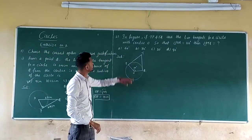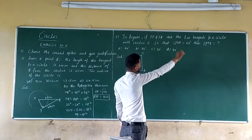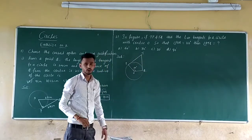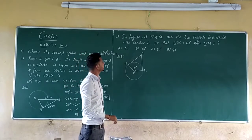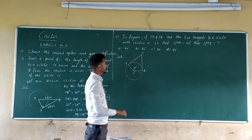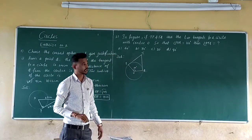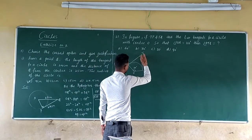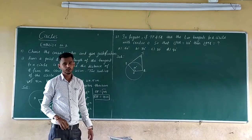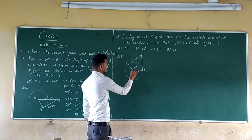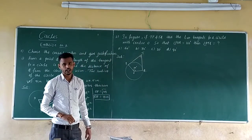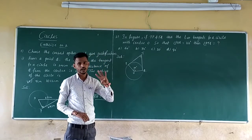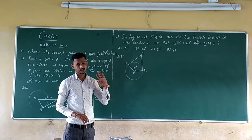Let us see the next question — second one. In the figure, if TP and TQ are the two tangents to a circle with center O, such that angle POQ is 110 degrees, then angle PTQ is equal to how much — that we need to find. So here OPTQ is a quadrilateral. The sum of all four angles of a quadrilateral equals 360 degrees.